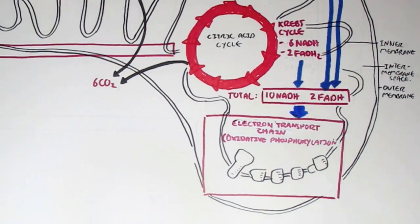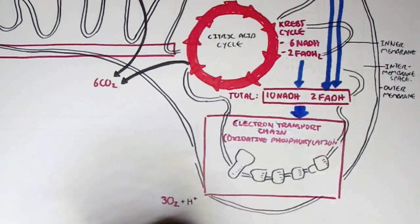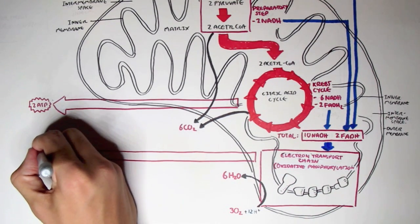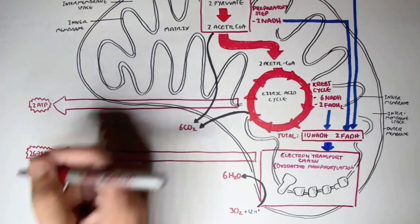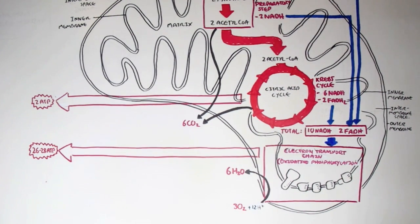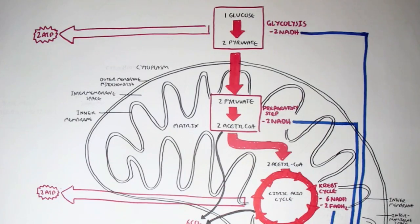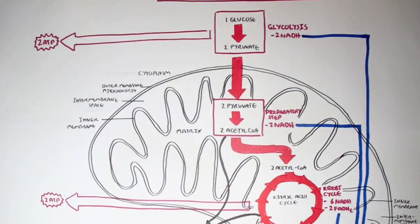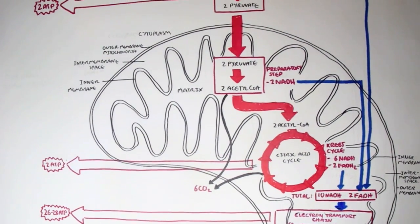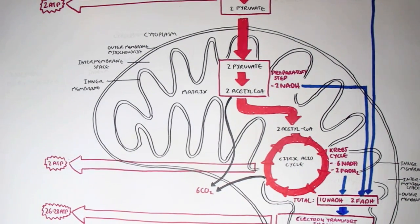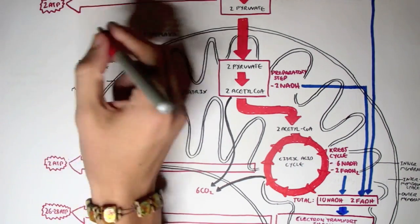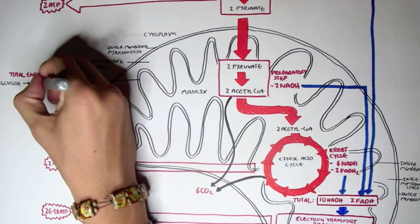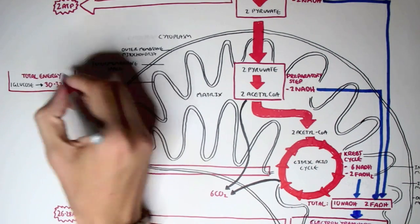What the electron transport chain — the oxidative phosphorylation process — does is that it will produce water, essentially 6 water. And also it will produce between 26 to 28 ATP, depending, and we'll see why this amount depends later on. If we tally up all the substances used and produced from glycolysis, the preparatory step, the Krebs cycle, and oxidative phosphorylation, it will overall equate to the formula of cellular respiration, where one glucose with oxygen will produce carbon dioxide, water, and energy. The total ATP produced from the oxidation of one glucose molecule is about 30 to 32 ATPs.